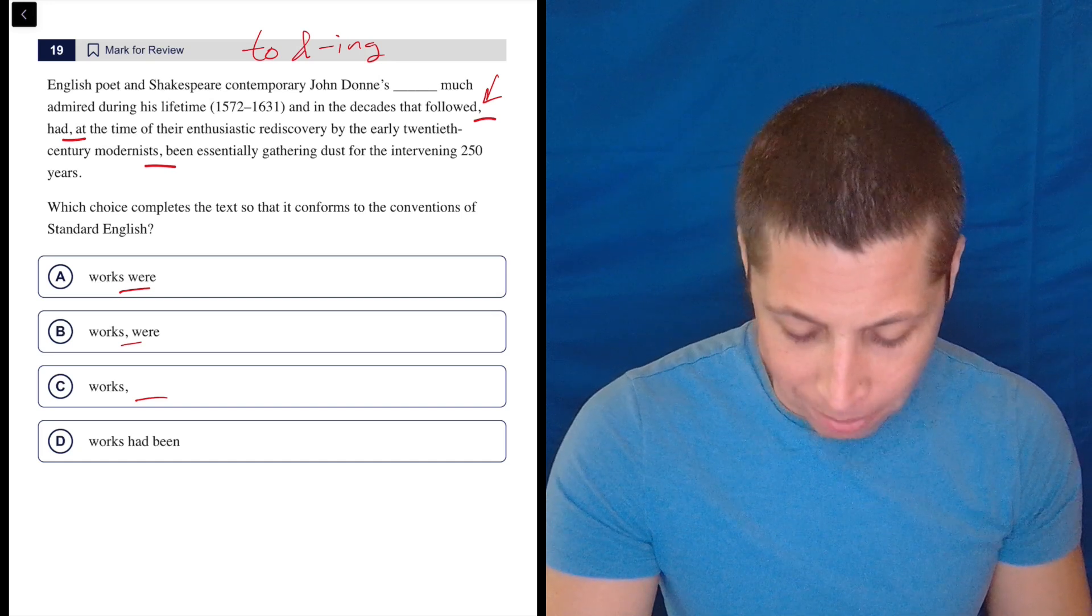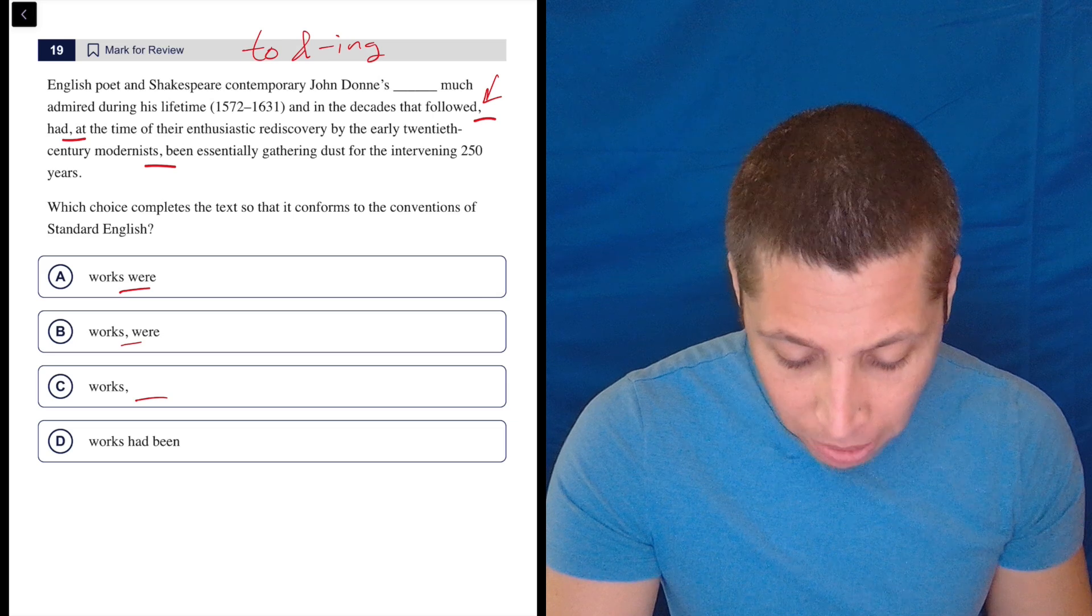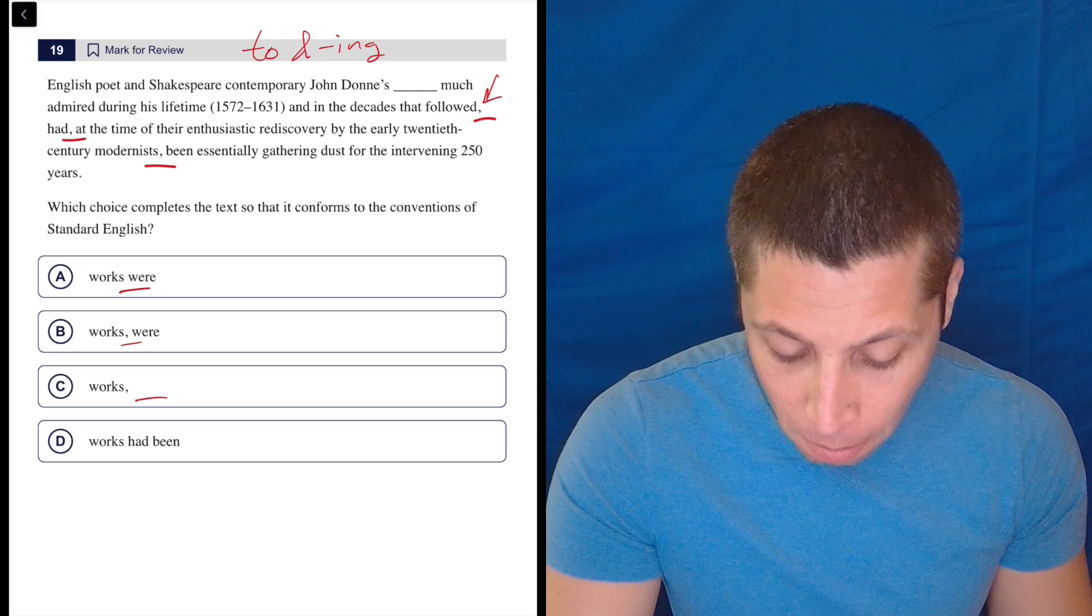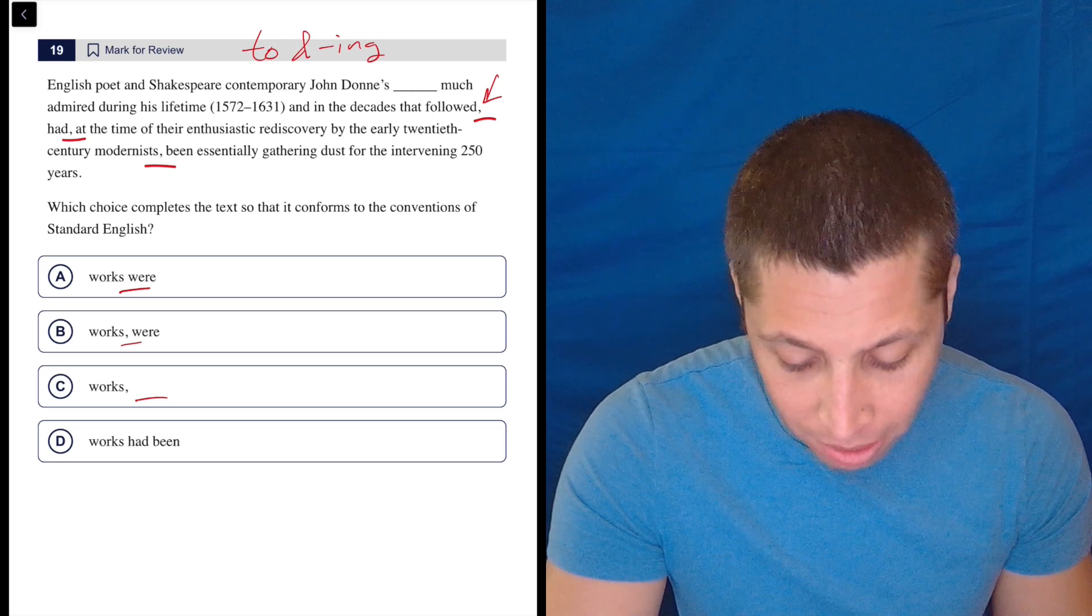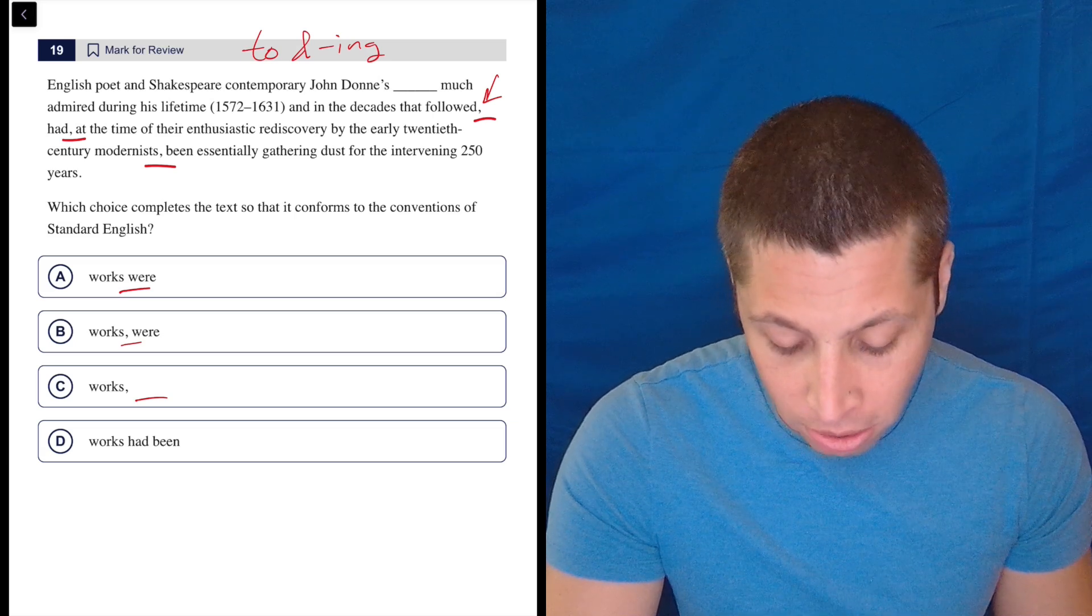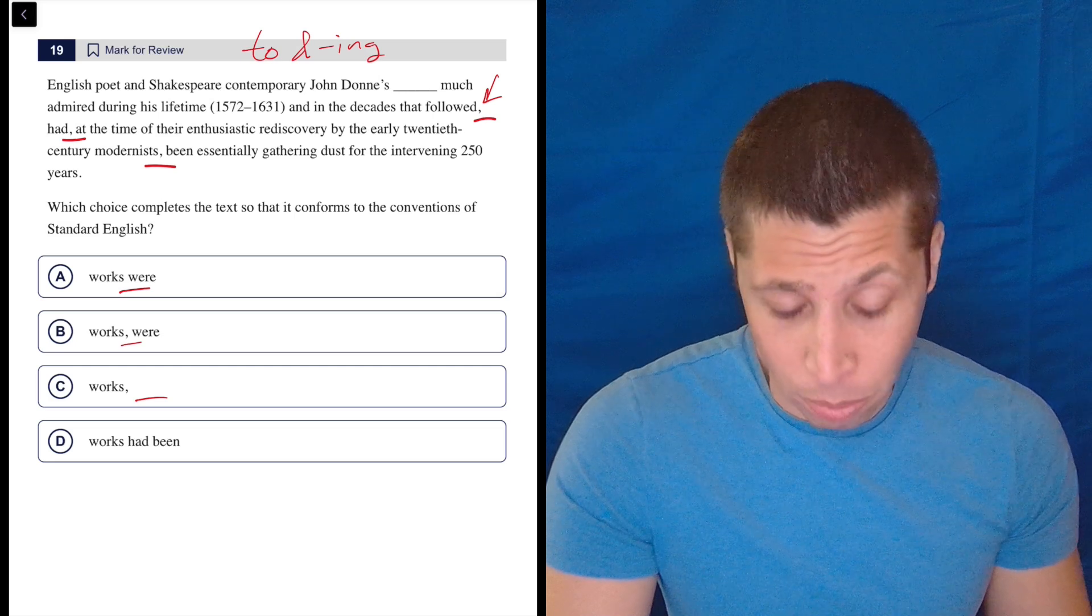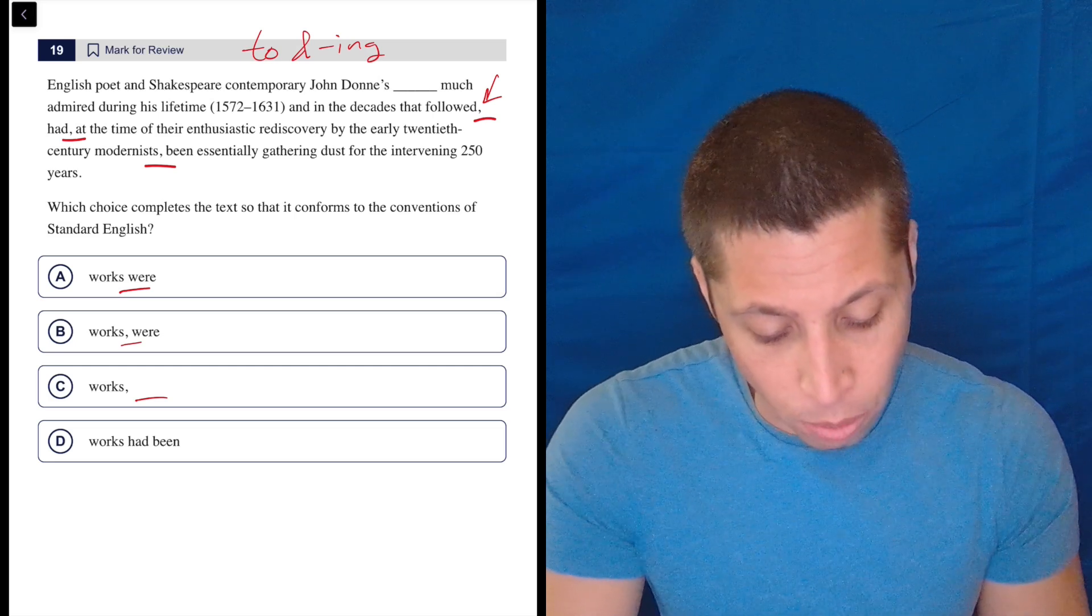Had. So wait a minute. English poet and Shakespeare contemporary John Donne's works were much admired during his lifetime in the decades that followed had at the time of their enthusiastic rediscovery by the 20th century modernists been essentially gathering dust for the intervening 250 years. So hopefully that sounds weird. It's very weird because it's wrong.